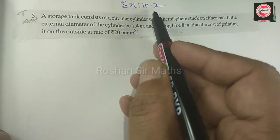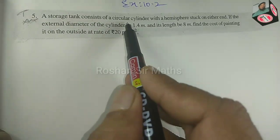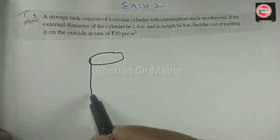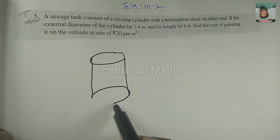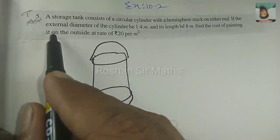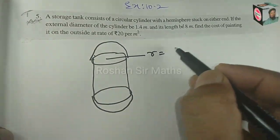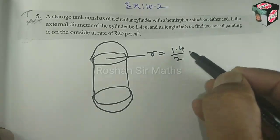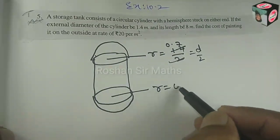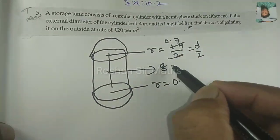Next question is exercise 10.2, question number 5. A storage tank consists of a circular cylinder with a hemisphere stuck on either end. The external diameter of the cylinder is 1.4 m, so R is equal to diameter divided by 2, which is 1.4 by 2, giving R equal to 0.7 meters. The height (length) is 8 meters.